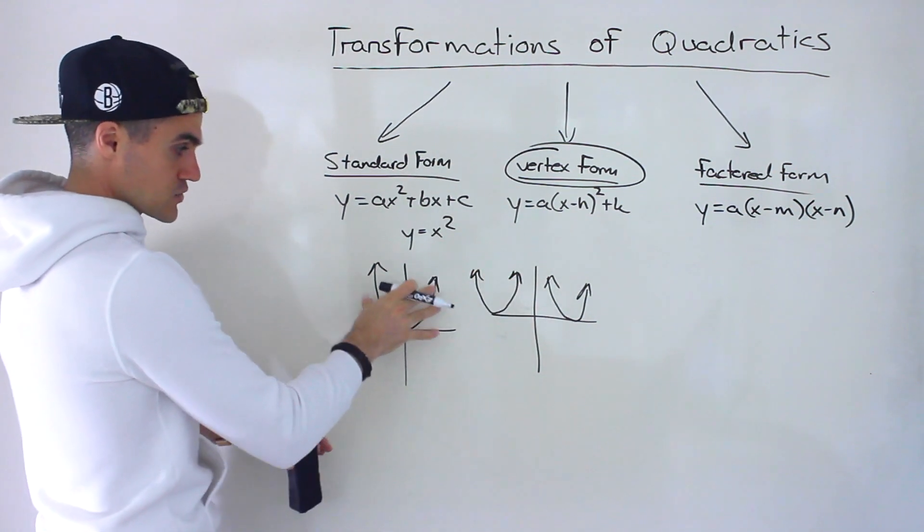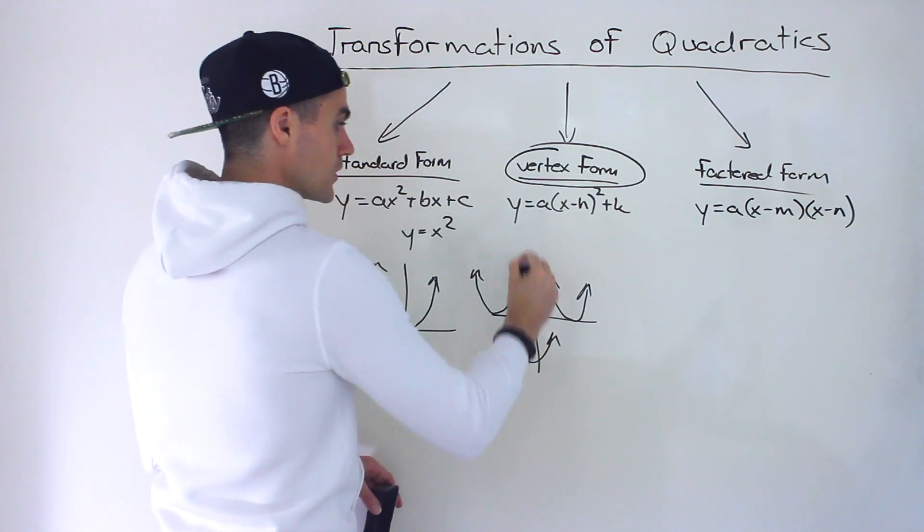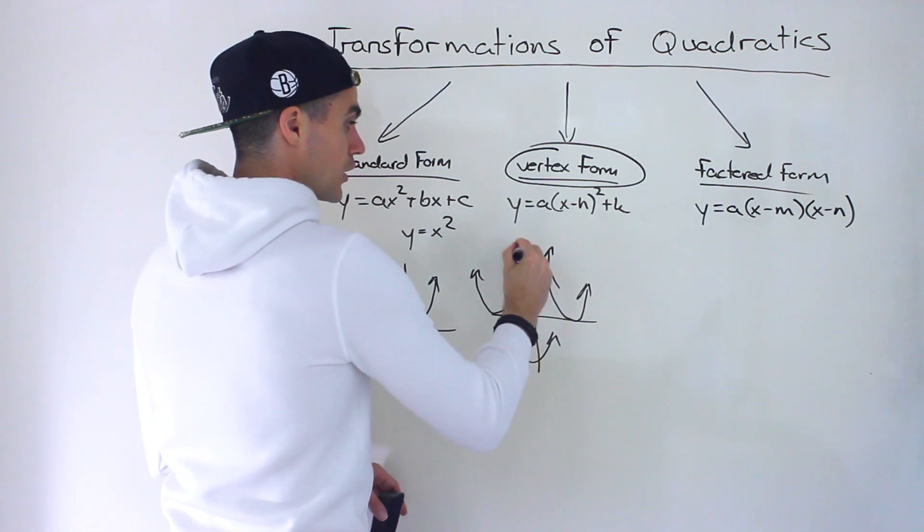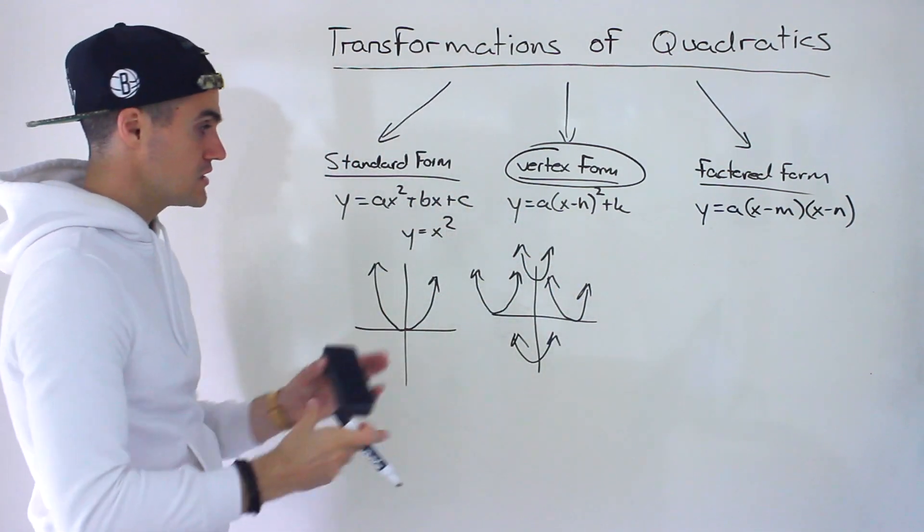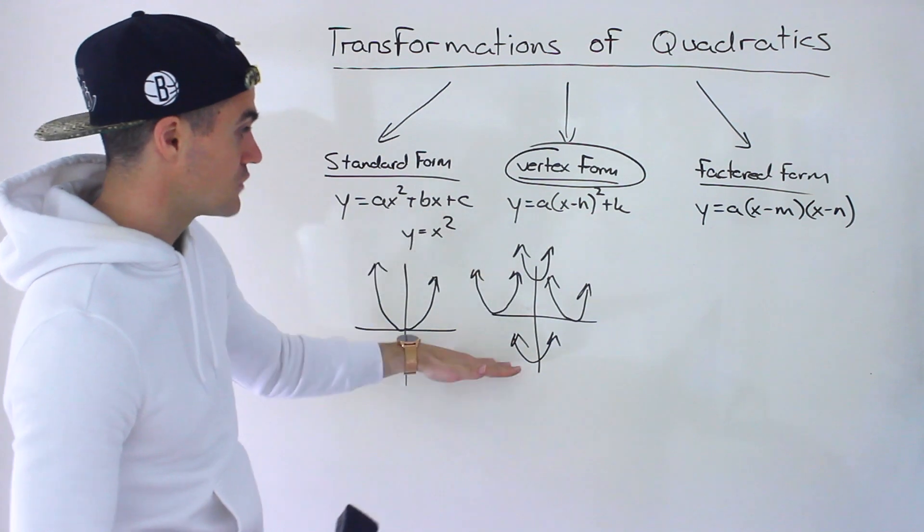We can also take y equals x squared, we can shift it down, so it'll look like that, we could shift it up. We can also do combinations of these. So we can maybe shift it to the right and shift it up, or shift it left and shift it down.